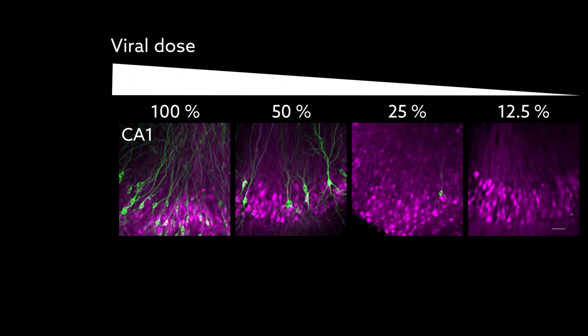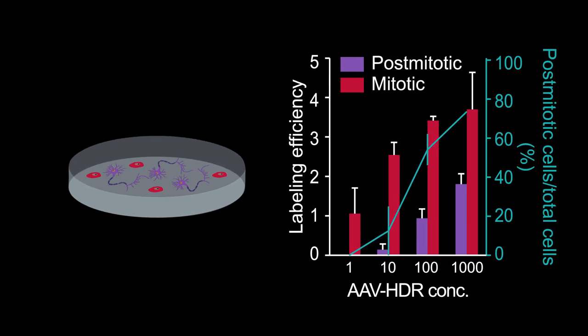To more carefully study this phenomenon, the scientists set up cultures of mitotic and post-mitotic hippocampal cells, and found that post-mitotic cells need about 100 times more virus to get CRISPR to work.